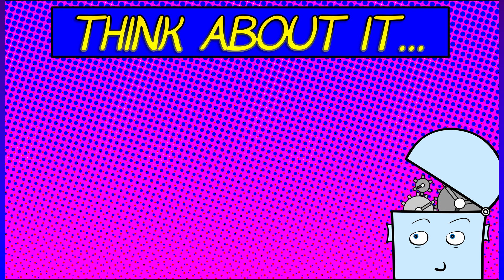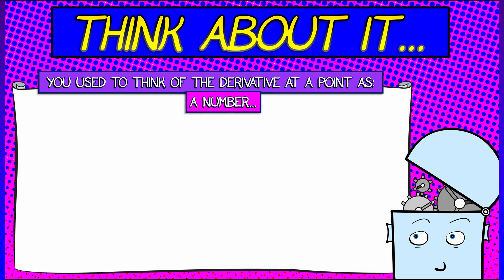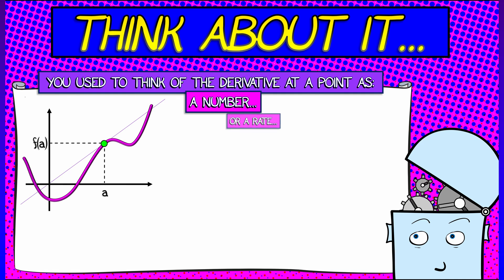If you think about it, you used to think of the derivative at a point as being a number way back in single variable calculus. You thought of it as a rate or slope, something like that.